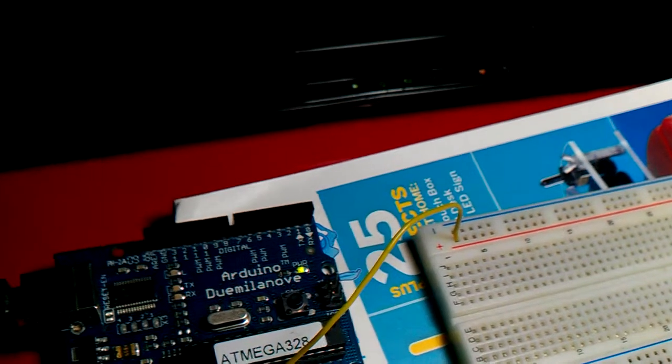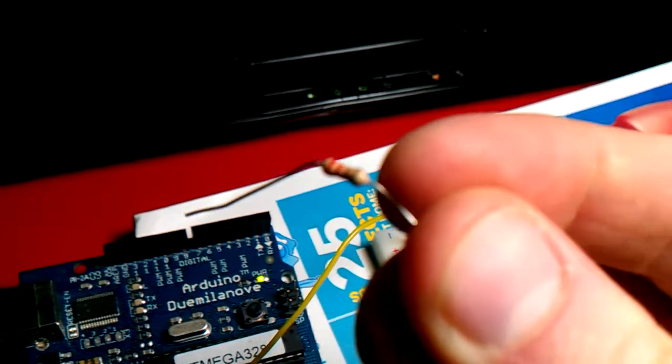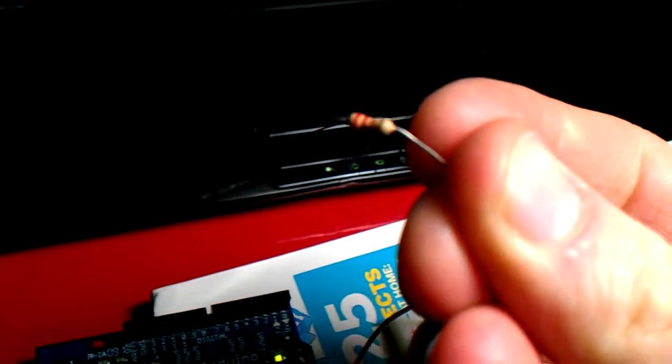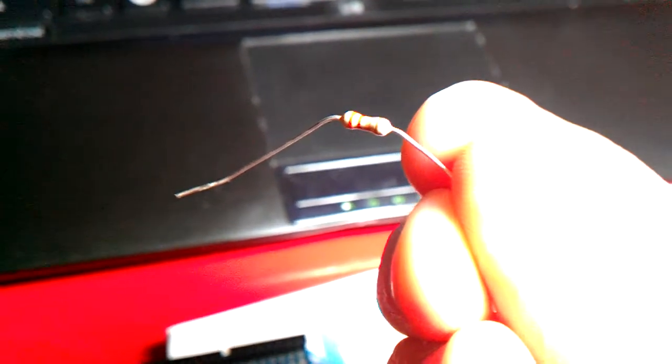And it only requires two components, a resistor and LED. This is a resistor. Basically, this kind of slows down current is the way to think of this. You put this in here so that you don't have too much current going to the LED. It's really just there to kind of burn off some power.